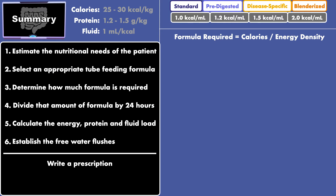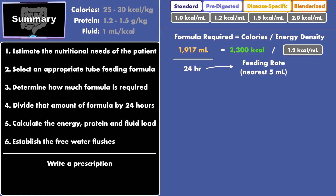For example, if you need to give 2,300 calories and choose a 1.2 calorie formula, the required amount of formula is 1,917 milliliters. You then divide by 24 to get the feeding rate, which would be 80 milliliters per hour.